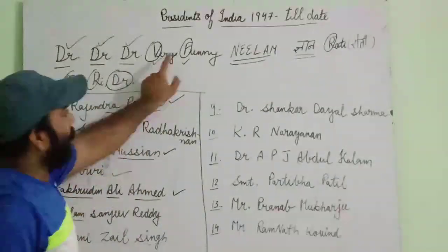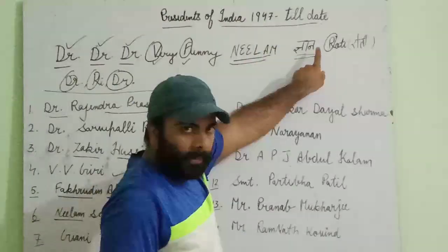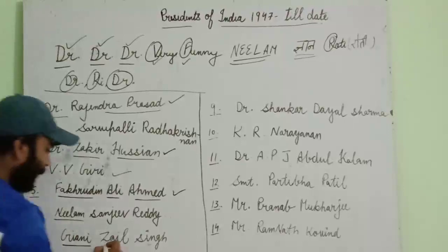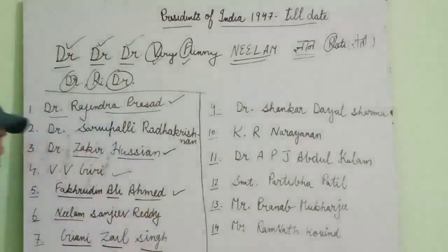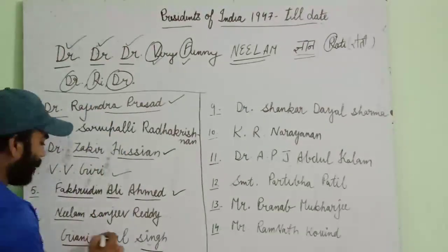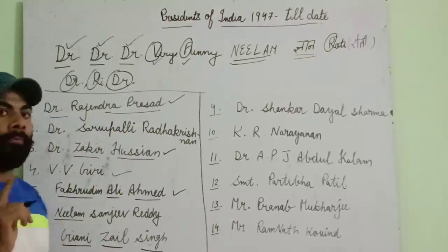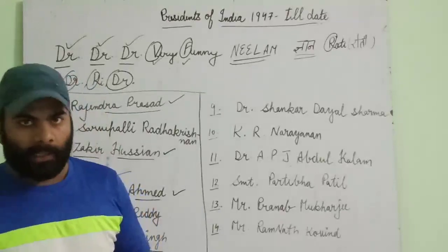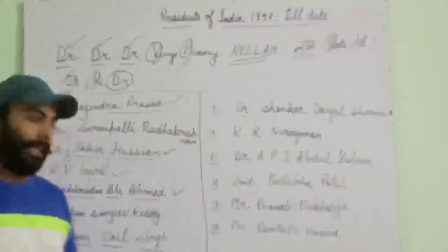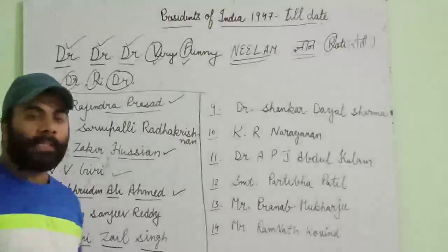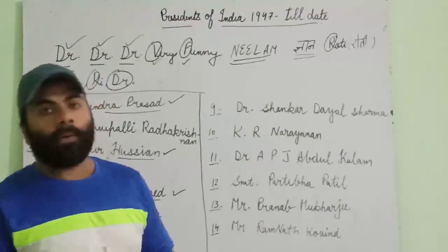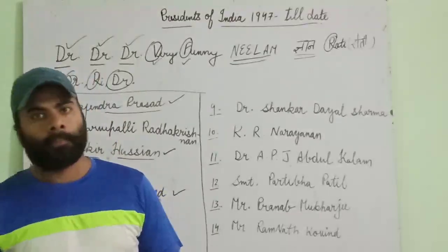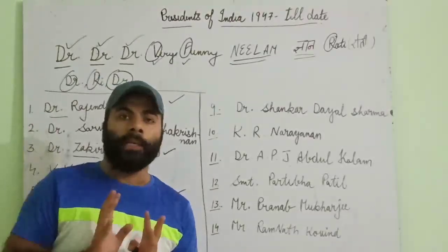'Gyaan' in the mnemonic stands for Gyaani Zail Singh, the seventh president of India. He was the first Sikh president of India. He is also notable for using the pocket veto power — meaning he refused to sign a bill passed by both the Lok Sabha and the Rajya Sabha.